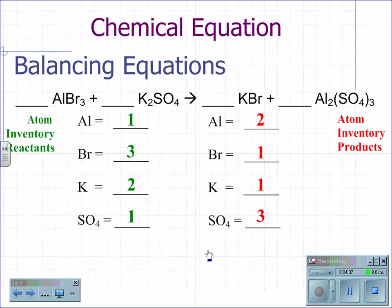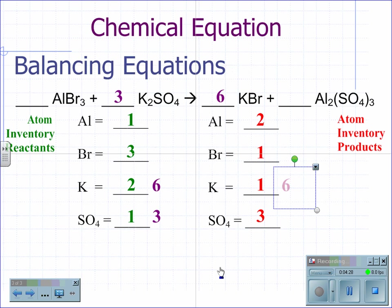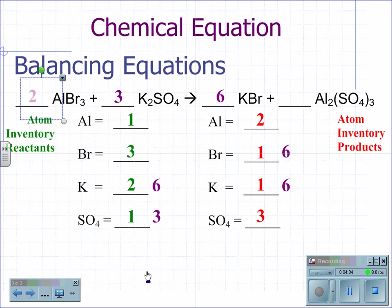I'm going to start by balancing the sulfates. I'm going to put a coefficient of three in front of the potassium sulfate. This changes the amount of potassium to six and the amount of sulfate to three. Now I'm going to balance the potassium by placing a six in front of the KBr. This gives us now six potassium and six bromine. To balance the bromine, I'm going to put a two in front of the AlBr₃.